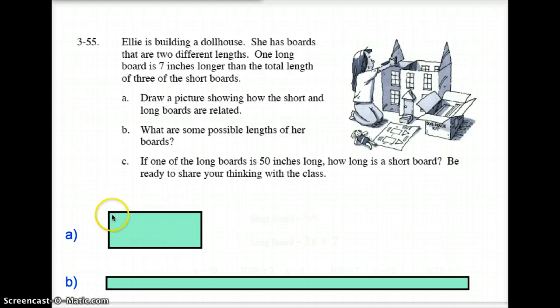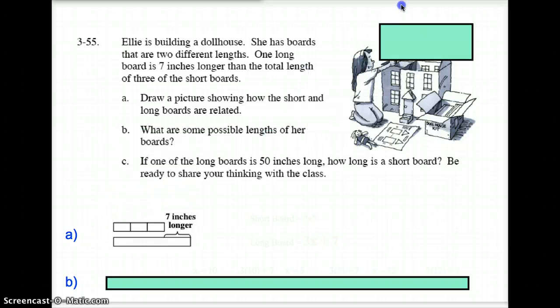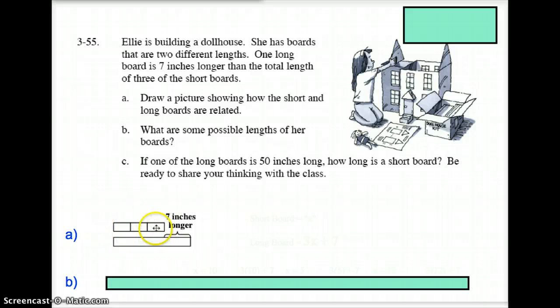Let's draw a picture to make sure we understand what that looks like altogether. So right down here you can see our little picture: the three short boards right here, and the one long board which is seven inches longer than the three short boards put together. Does that make sense?